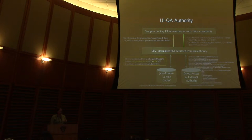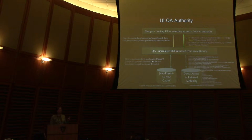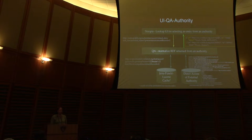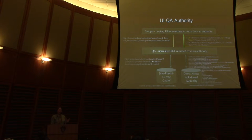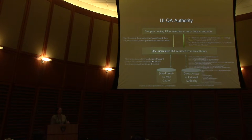QA does its magic and returns that data in the same structure every time. It gives you a URI, a label — and it doesn't matter whether that label was a SKOS preferred label or a MADS-RDF authoritative label. You've configured in advance what a label means for this particular authority, and it just gives you a label. It also gives an ID if the system has one. That's the big picture of how it works, and now I'll show you a couple of examples of what that can look like in user interfaces.